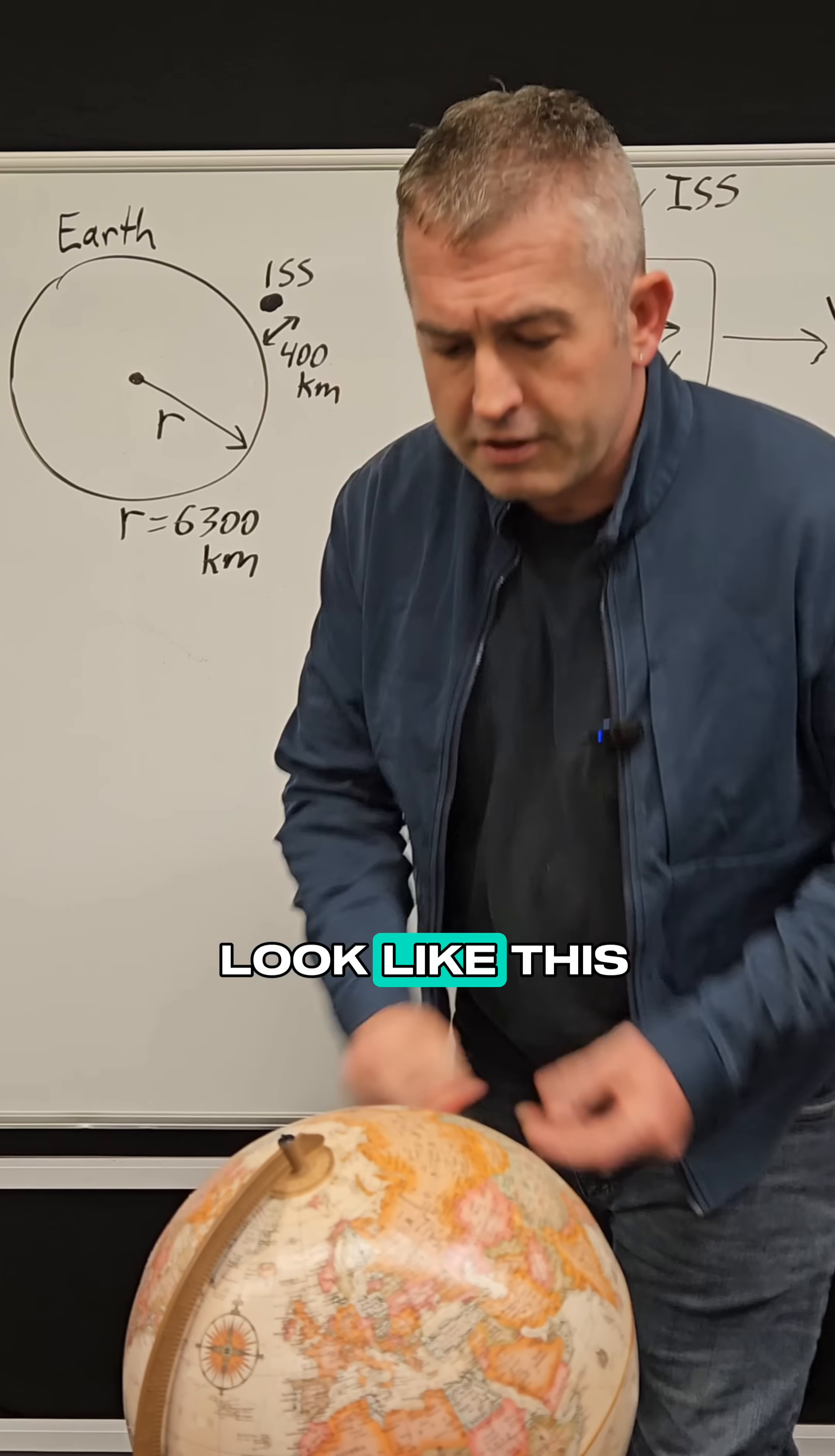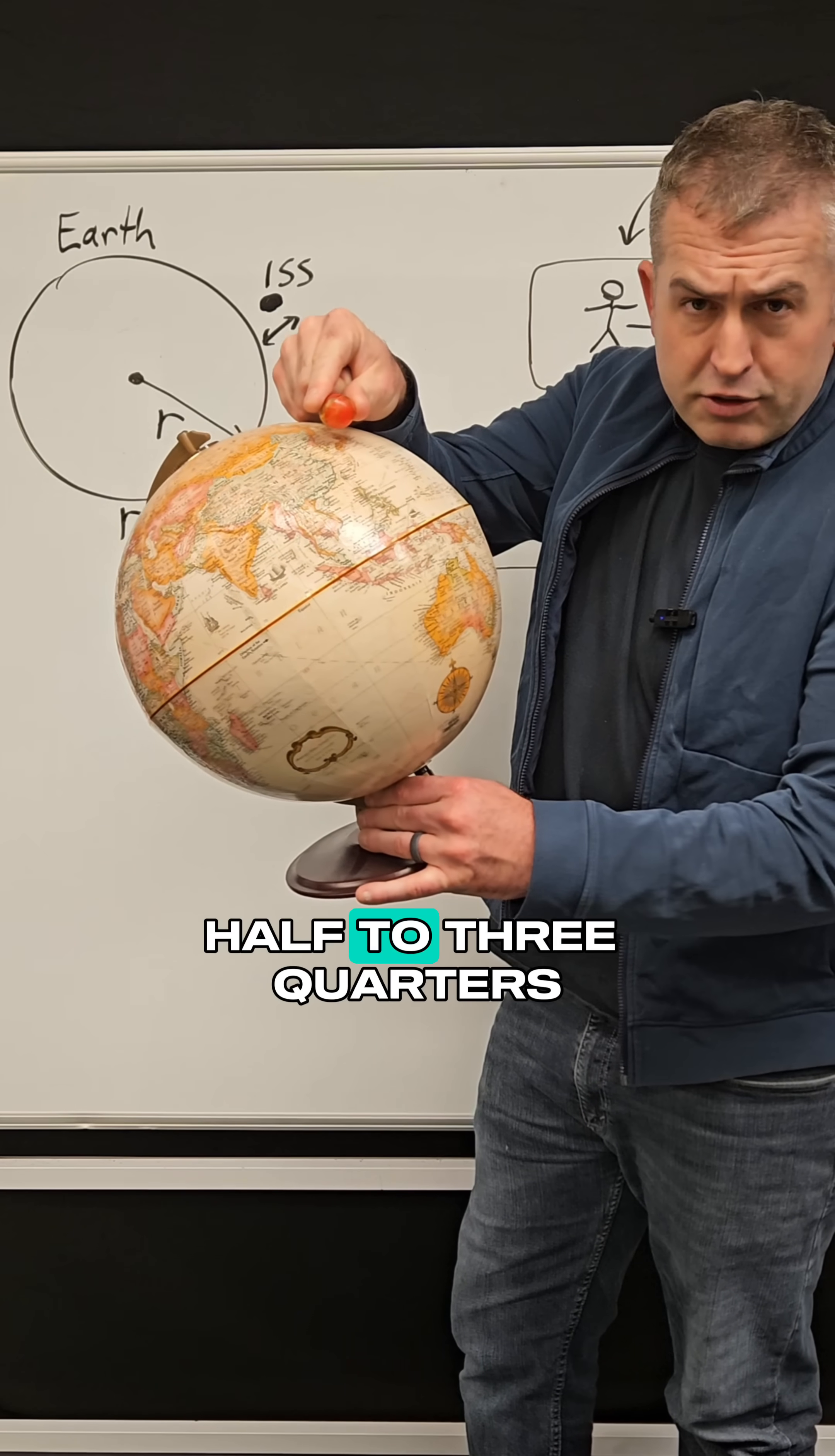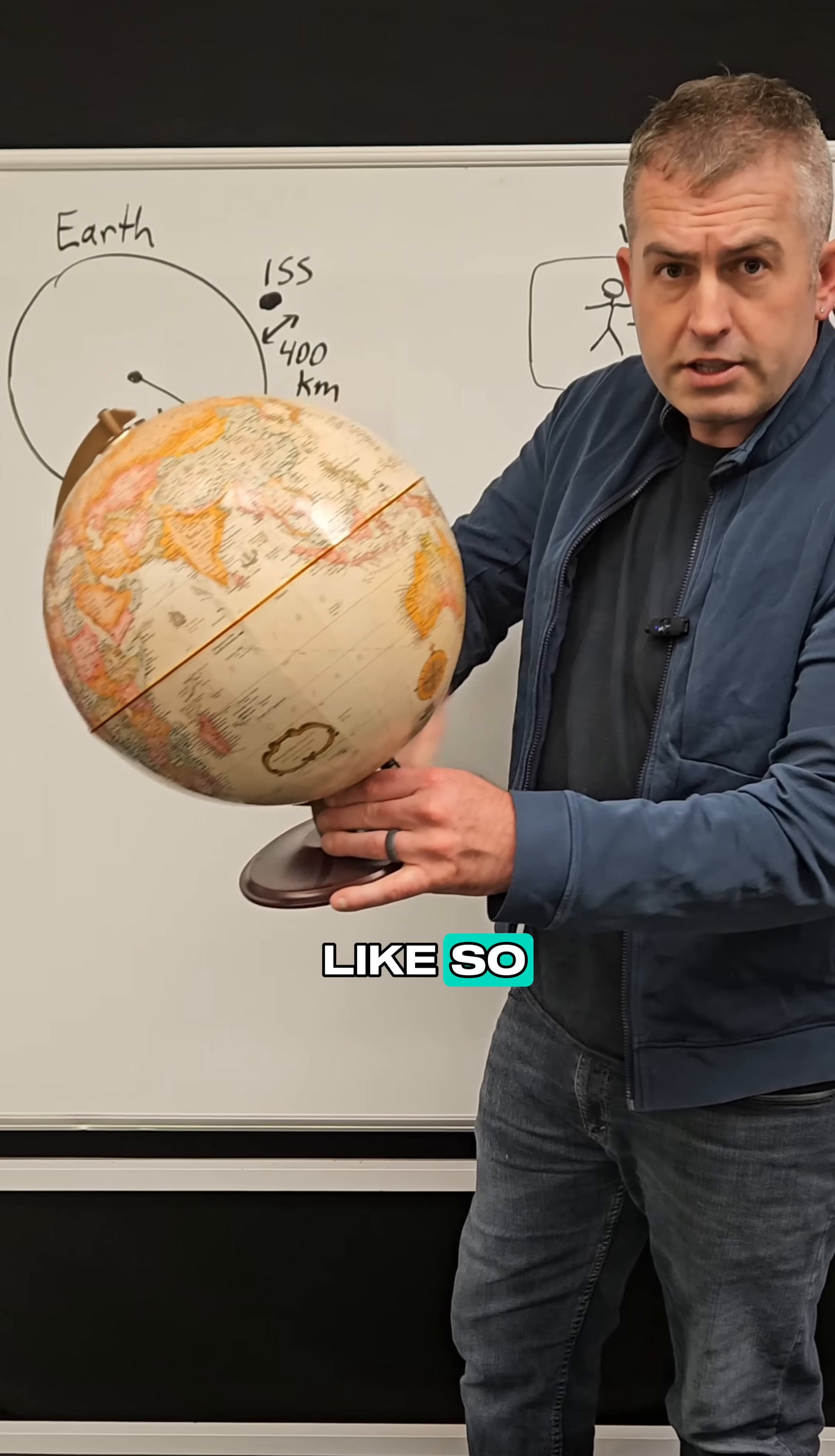So visually, that would look like this. If this globe represents the Earth, the International Space Station would be about one-half to three-quarters of an inch above the Earth, going around the Earth like so.